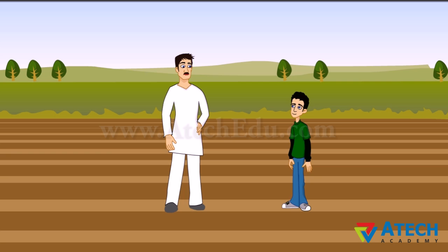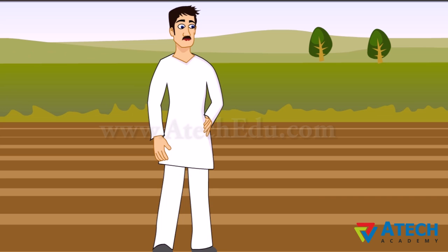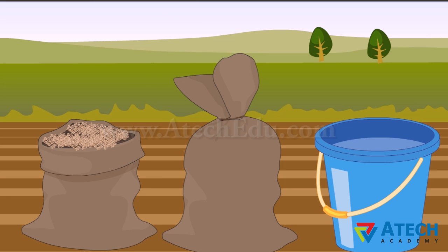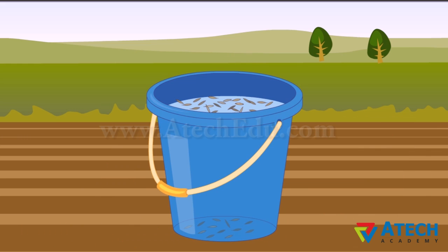After the soil is prepared, we sow the field. Before sowing, good quality seeds are selected. Good quality seeds are clean and healthy. To separate healthy seeds from damaged ones, fill a bucket half with water and add a handful of wheat seeds, then stir and wait. Damaged seeds become hollow and lighter, so they float. Good quality seeds are heavier and sink.